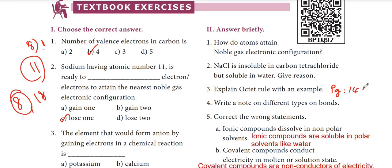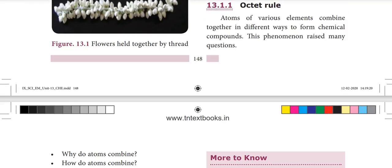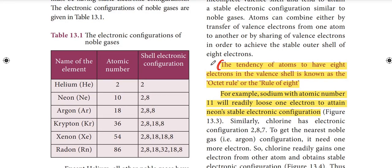Third: explain the octet rule with an example. The tendency of atoms to have 8 electrons in the valence shell is known as the octet rule or the rule of 8. For example, sodium with atomic number 11 will readily lose 1 electron to achieve neon's stable electronic configuration. This is the answer.